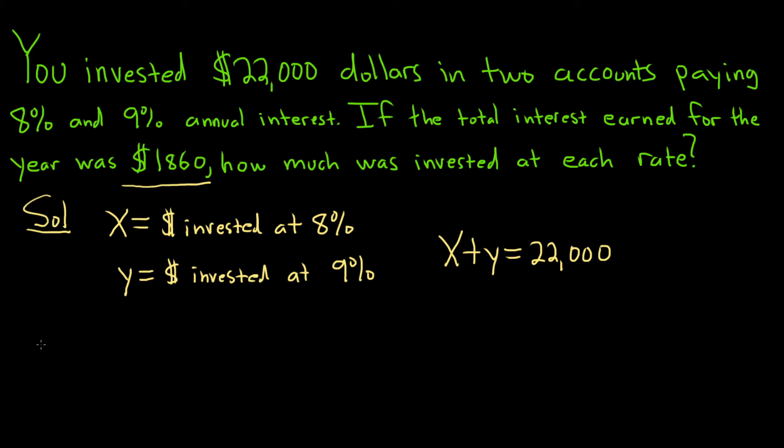It's important to know how to come up with this. If you invest X dollars at 8%, then how much money do you make from that? You make 8% of X. This is how much money you earn. This is earned at 8%.